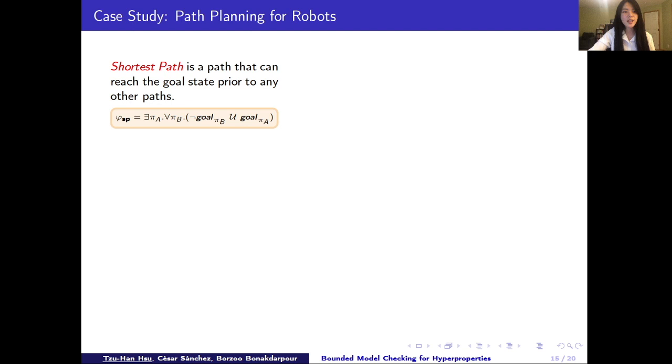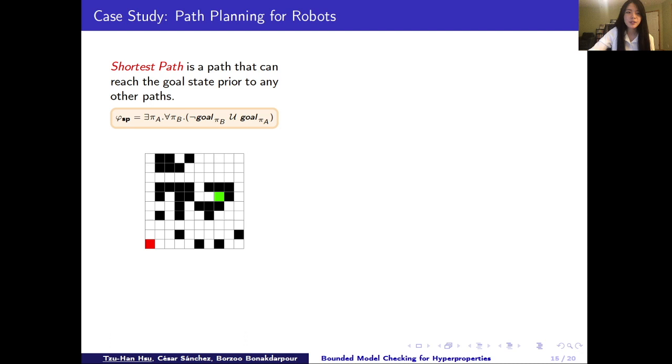The last one we have is the optimal path planning problem for robots. A shortest path can be expressed using the hyperLTL formula shown here. We implement a square grid, which red grid is initial positions and the green grid is the goal positions. The black grids are the walls that we don't allow robots to hit on. By solving a model together with the formula, we're able to synthesize this shortest path on this grid marked as the blue arrows here on the figure.